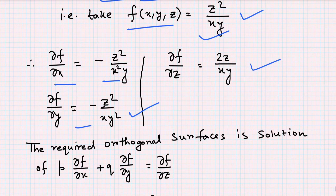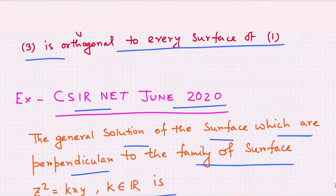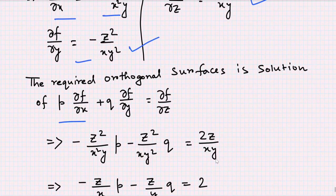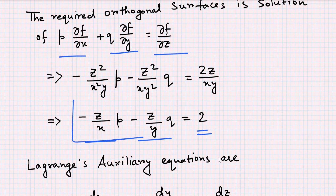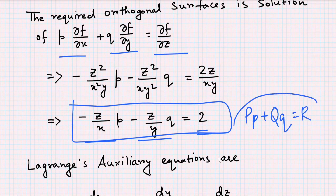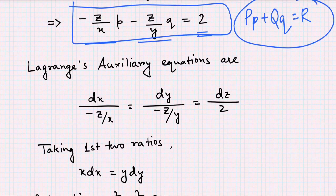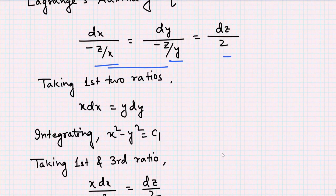The required orthogonal surfaces are the solution of the PDE: p·(∂f/∂x) + q·(∂f/∂y) = ∂f/∂z. Substituting the values, we get −(z/x)·p − (z/y)·q = 2. This is of the form Pp + Qq = R, solved using Lagrange's method. The Lagrange auxiliary equations are dx/(−z/x) = dy/(−z/y) = dz/2.